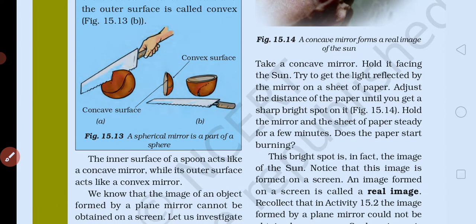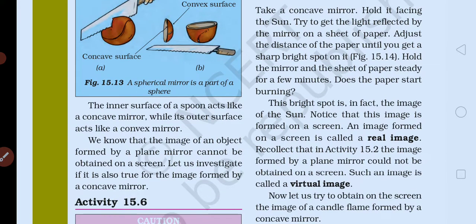The inner surface of a spoon acts like a concave mirror, while its outer surface acts like a convex mirror. The inner part is the concave mirror and the outer part is the convex mirror.